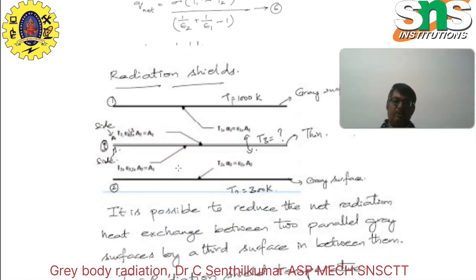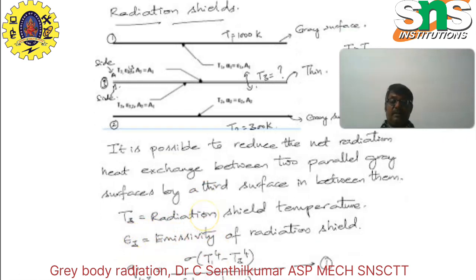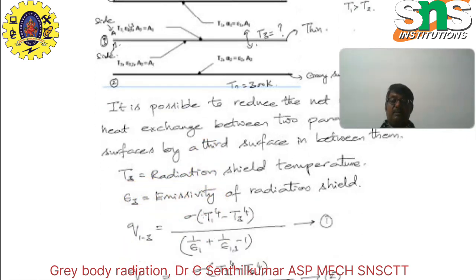It is possible to reduce the net radiation heat exchange between two parallel grey surfaces by inserting a third surface between them. T3 is equal to the radiation shield temperature, and emissivity 3 is equal to the emissivity of the radiation shield. Here we can notice the formula which is formulated.